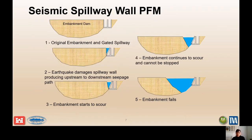A sketch of the third potential failure mode shows the wall collapsing and leading to internal erosion of the adjacent embankment. One thing missing from the sketch is that if there are gates in the spillway bays, failure of those gates due to wall failure would also need to be included in the total breach width.